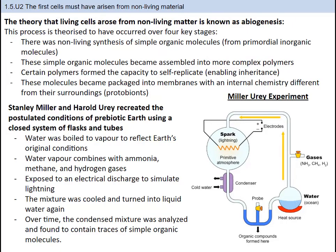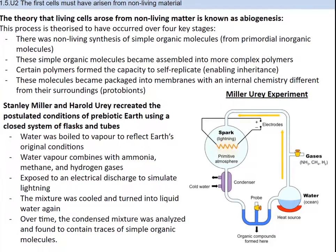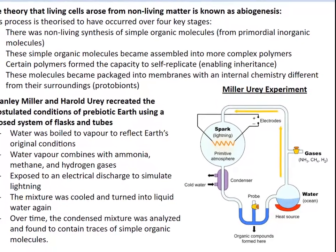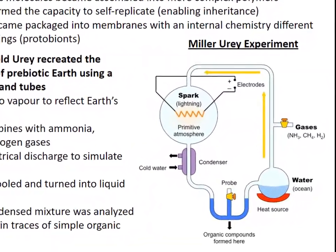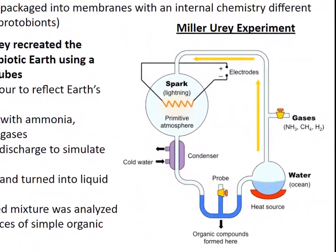This theory has in fact been tested, and there is supporting evidence for it. Stanley Miller and Harold Urey were two scientists that in 1953 conducted an experiment to test this. Essentially, Miller and Urey concocted a set of test tubes and flasks that were a closed system, completely consisting of different gases and conditions found on early Earth. As you look at the picture on the right, you can see the general setup.